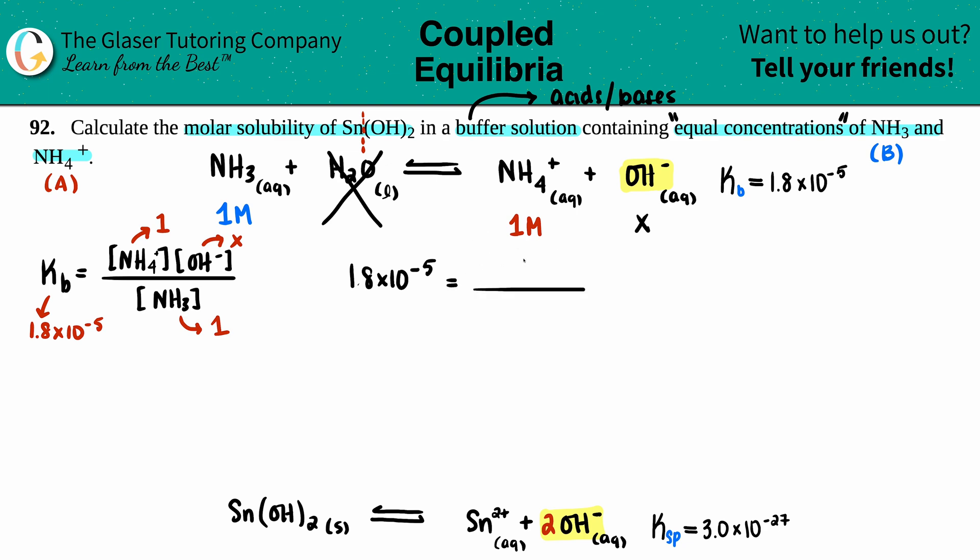1 times x divided by 1 equals the Kb. The idea was that since they were equal concentrations, these cancel out and you're just left with x equals...